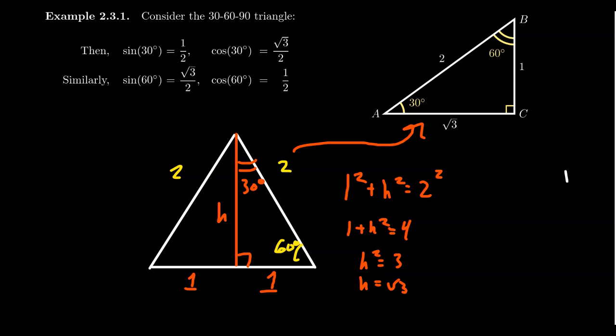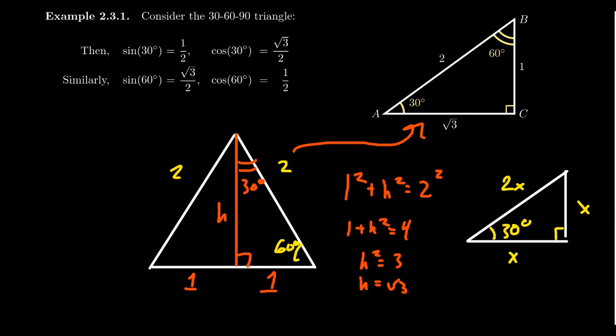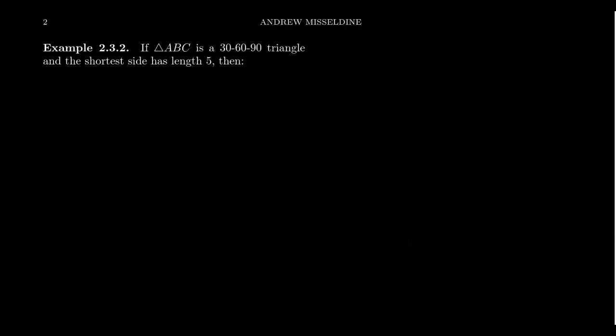In summary, if you have a 30-60-90 triangle and you know the short side x, the hypotenuse is always 2x and the medium side is always x times the square root of three. This relationship simplifies calculations with 30-60-90 triangles.